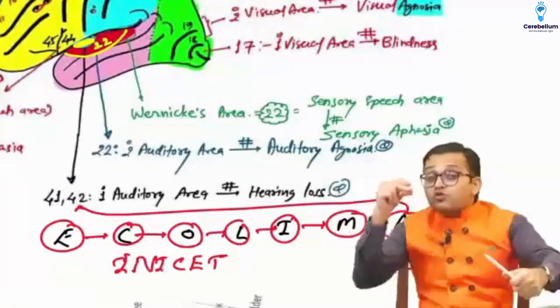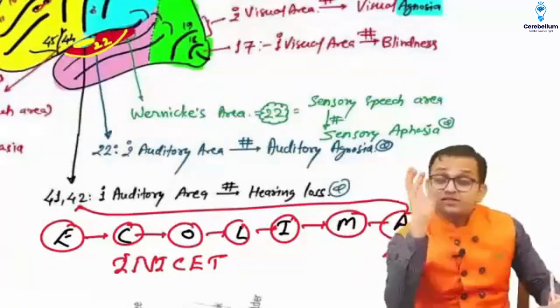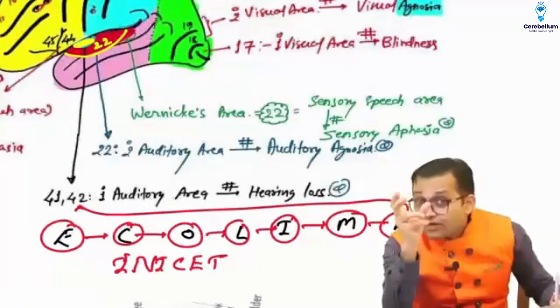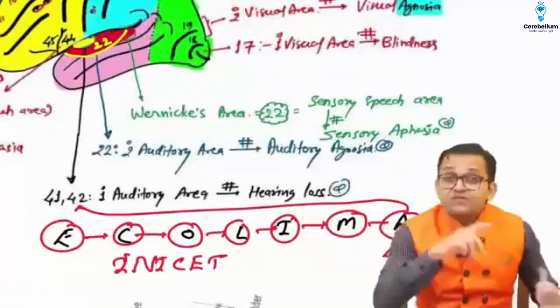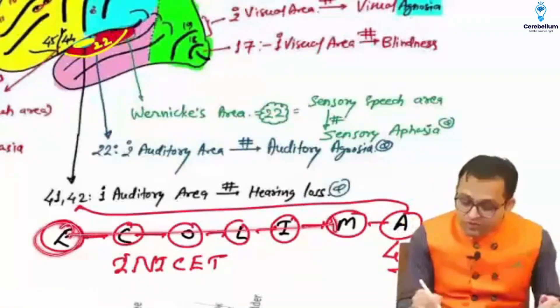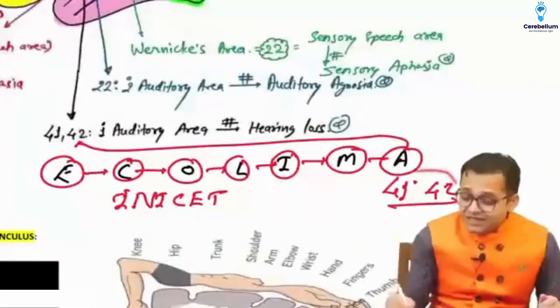Then there is a horn. So what is happening? We are listening to the sound - quality, loudness, distance of the sound. It will come through this pathway into the area number 41, 42.